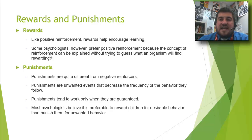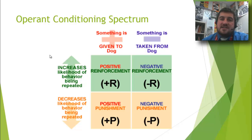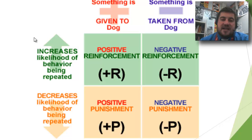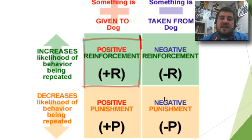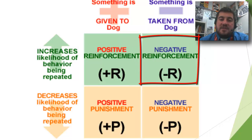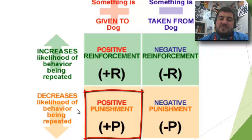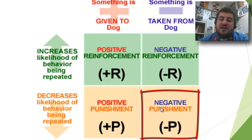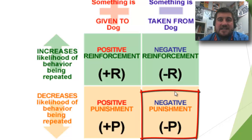Most psychologists believe punishment is harmful. It's much easier to reward children for desirable behavior than to punish them for unwanted behavior. Looking at a dog training chart: positive reinforcement gives something to increase the behavior; negative reinforcement takes something away to increase it; positive punishment adds pain to decrease it; and negative punishment — like a timeout, taking away playtime so a child doesn't hit their sibling — removes something to decrease behavior.